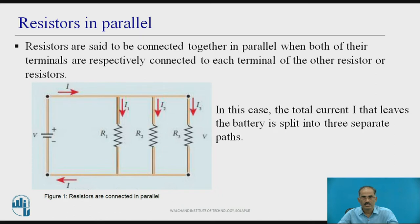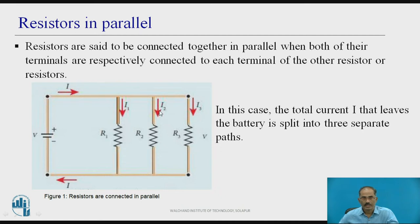Resistances in parallel. Resistances are said to be connected in parallel when both of their terminals are respectively connected to each terminal of the other resistor or resistors. See this diagram — there is a voltage source connected, and there are three resistances R1, R2 and R3 which are connected in parallel.